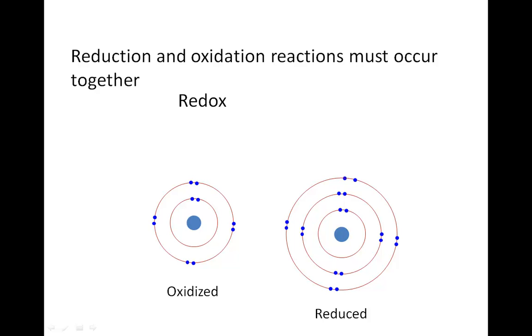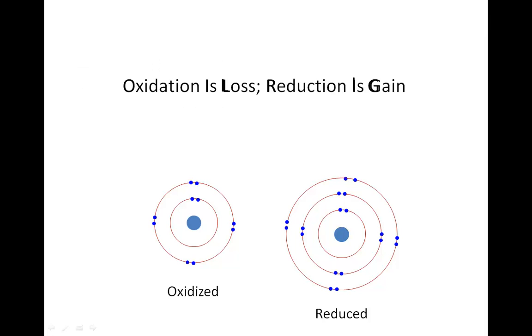It may seem strange that gaining an electron would be called a reduction. One way to remember this is that gaining a negatively charged electron reduces the charge of the atom or molecule. You can also remember that oxidation is lost and reduction is gained by remembering the acronym OILRIG.